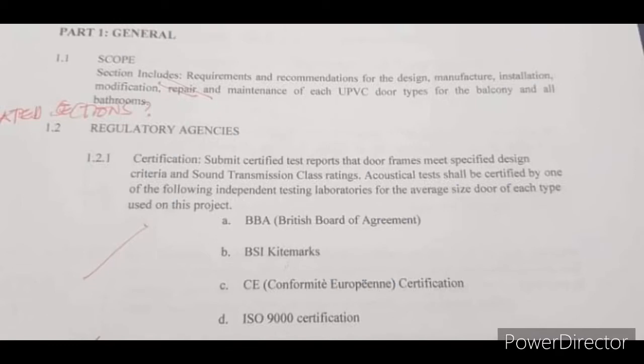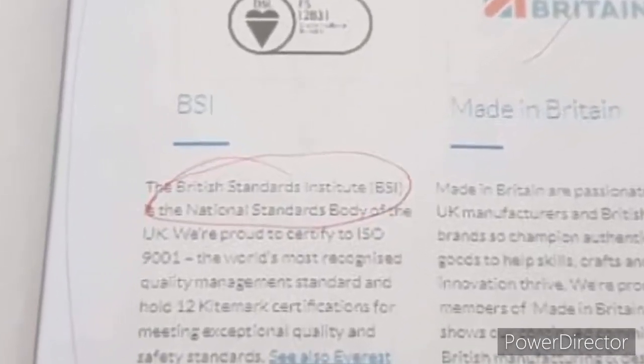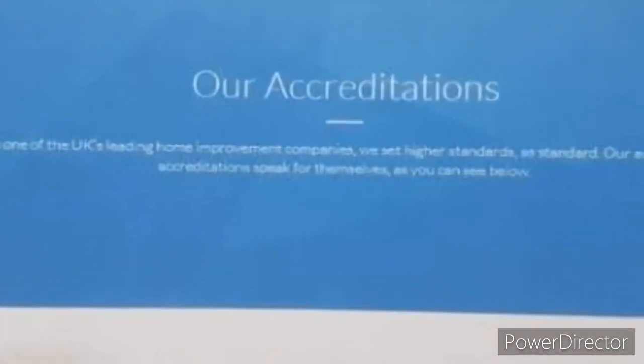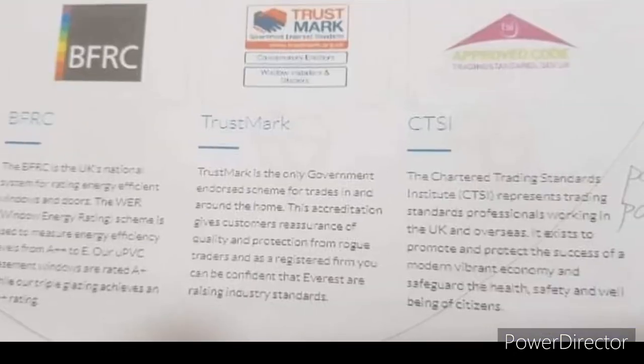In this page you can see that under my general section I have placed the scope and the regulatory agencies. Under scope, this is where you give a brief statement about what you have entered on your paper and other significant information. For the regulatory agencies, using your reliable brochures, you will be able to find this on their accreditation page. On the other hand is the quality assurance, also known as qualifications, which can sometimes also be found on your brochure's accreditation page.